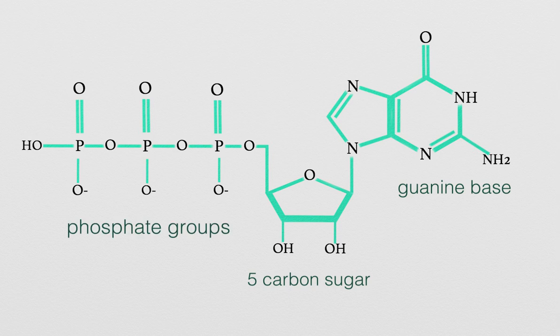These phosphate groups are named according to their proximity to the carbon. The first group is designated the alpha phosphate, the second is referred to as beta, and the third is gamma.